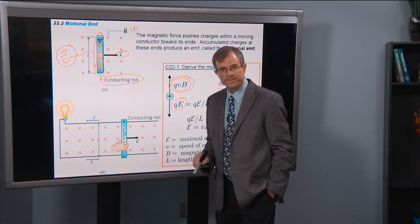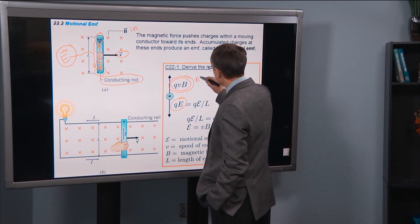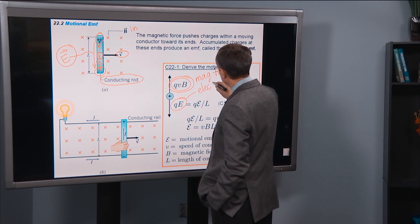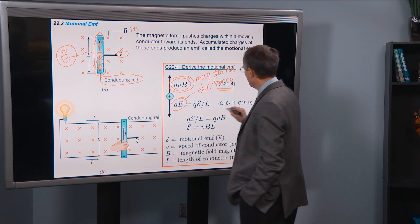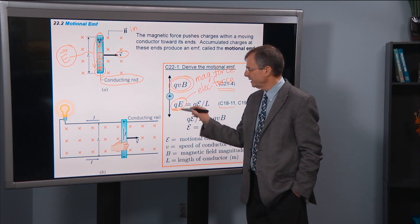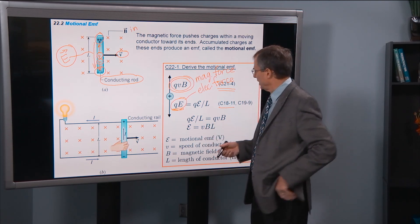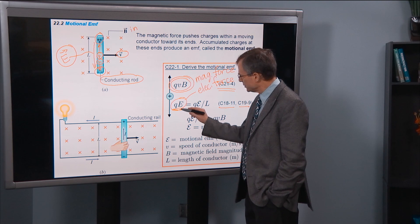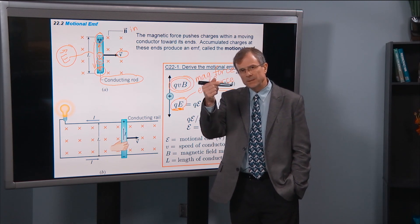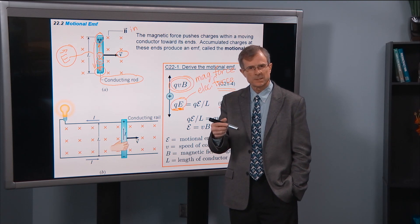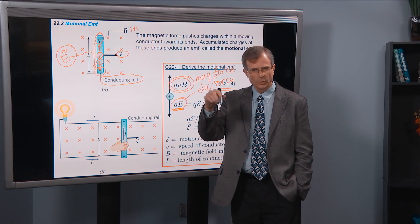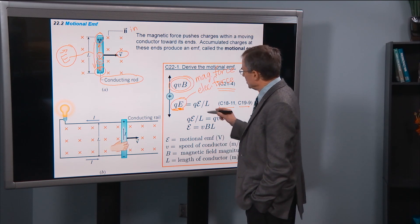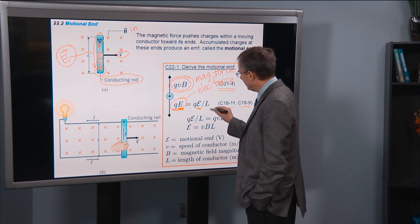We also have an electric force on charged particles. This is the magnetic force here. And this is the electric force. If you go back to concept 18-11, you'll find that definition of that electric force is q times E. And then if you go back to concept 19-9, there's a relationship between the electric field and the voltage difference across the distance. The electric field is minus the change in voltage divided by Δs. So Δv over Δs with a minus sign out in front. So that electric field is a voltage divided by a distance.